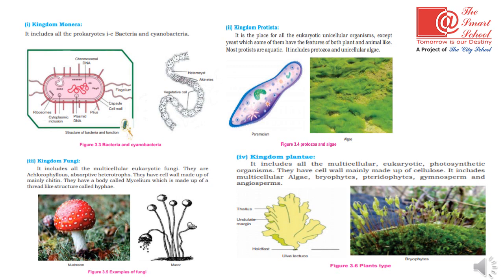Kingdom Fungi includes all multicellular eukaryotes that are achlorophyllous absorptive heterotrophs — they perform absorption and lack chlorophyll. Their cell walls are made up of chitin. Their body is called mycelium, which is made up of thread-like structures called hyphae. Kingdom Plantae organisms are multicellular eukaryotic photosynthetic organisms. Their cell wall is made up of cellulose — a key difference from fungi whose cell wall is made of chitin.